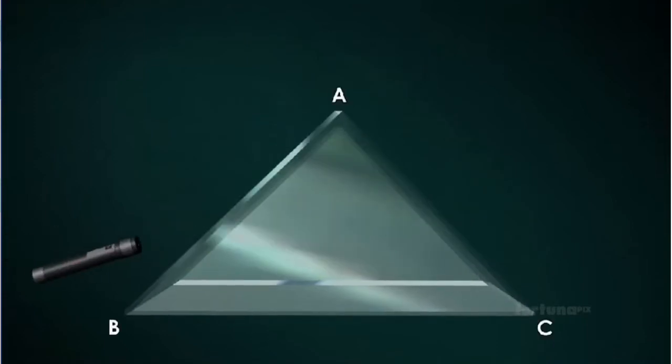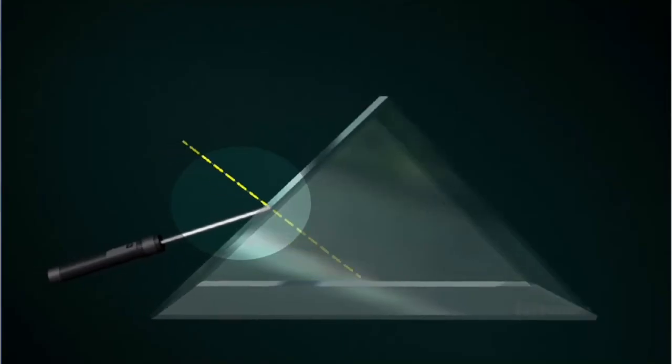When we shine a beam of light on one face of the prism, the light ray that strikes that face is called the incident ray. Let's draw the normal, an imaginary line perpendicular to the face of the prism.